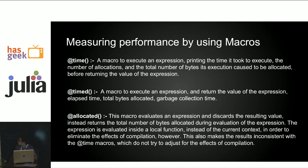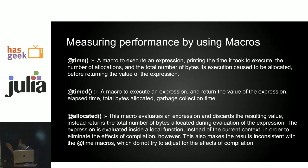Julia also provides a lot of macros where you can measure performance. The first, as discussed, is @time. There is also @timev. The difference between @time and @timev is that @timev returns a different set of parameters — it returns the value of the expression as well as garbage collection time, which @time doesn't. There is also @allocated, which gives you the memory allocation that your program is actually using. You can use @allocated to check how much memory is allocated for your program.